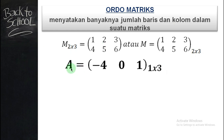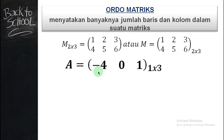Kalau ada suatu matriks A, berapa ordo matriksnya? Matriks A itu baris pertama — ingat baris tadi pada kelas Mobile Legends — pada baris terdepan ada 4, 0, 1. Jadi hanya satu baris. Kemudian untuk kolom: kolom 1 ada angka 4, kolom 2 ada 0, kolom ketiga ada 1. Ada tiga kolom. Jadi penulisan ordo matriksnya adalah satu kali tiga.